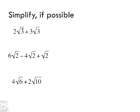The example is 2 radical 3 plus 3 radical 3. When dealing with this, let's imagine that x is equal to the square root of 3. So instead of radical 3, we're going to substitute x, because we're saying x equals radical 3. I'm doing this just to compare it with what I showed you at the beginning.